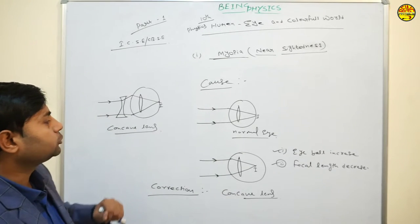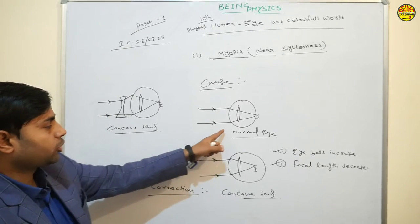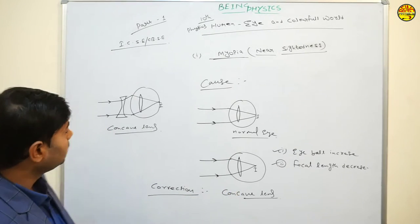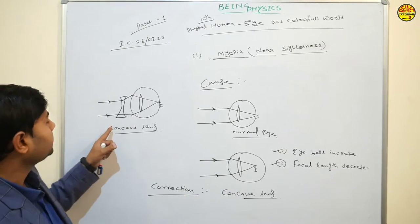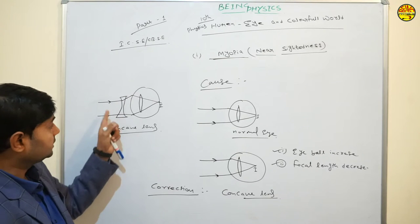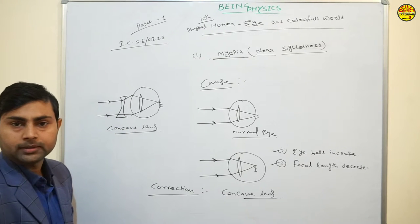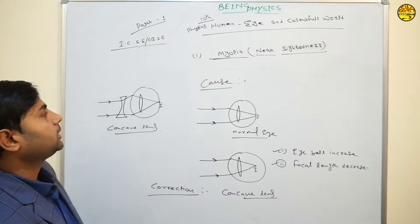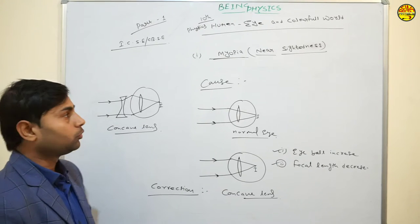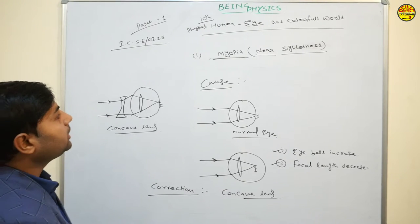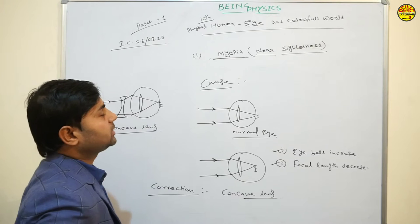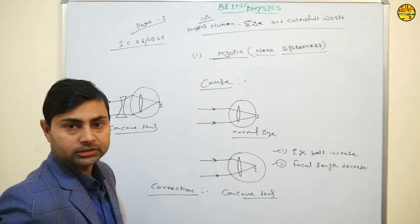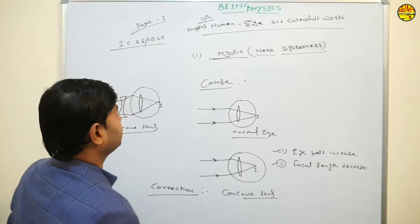The correction for myopia is the concave lens. We can compare the normal eye, the myopic (defected) eye, and the corrected eye. With a concave lens, the image now falls correctly on the retina — this is the corrected eye.